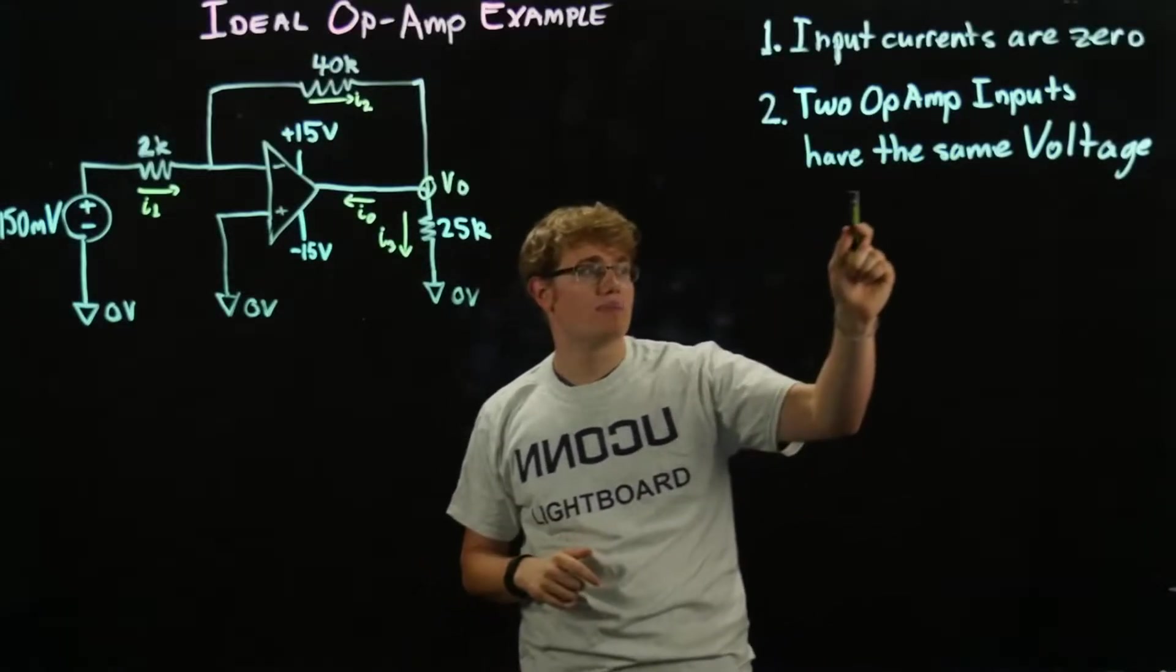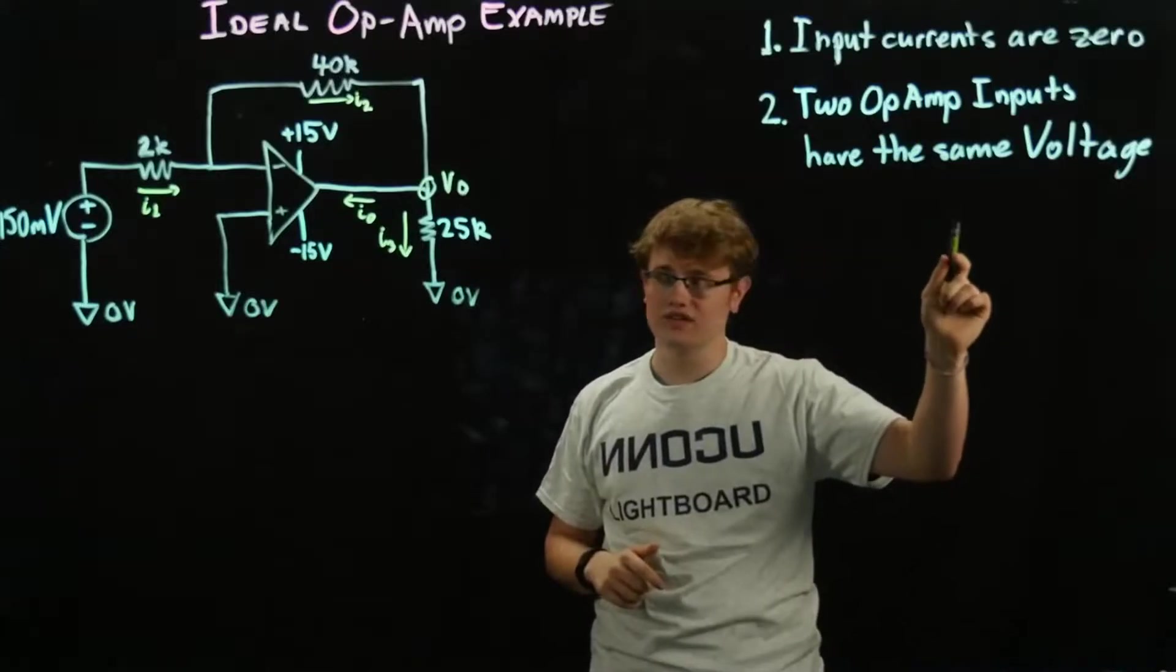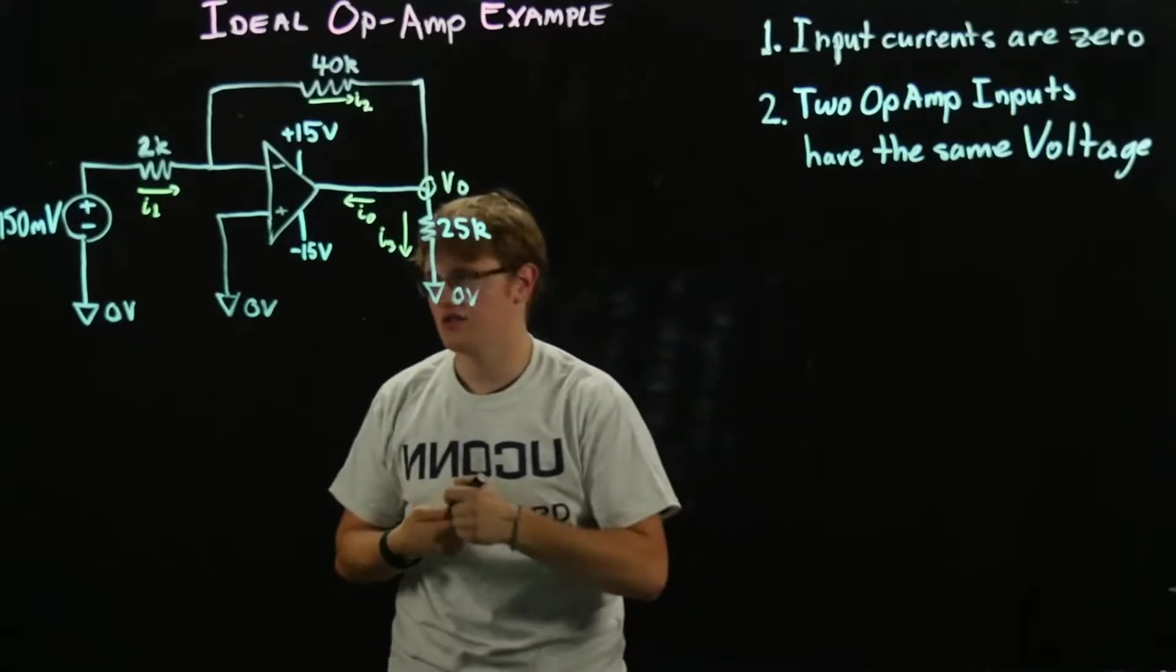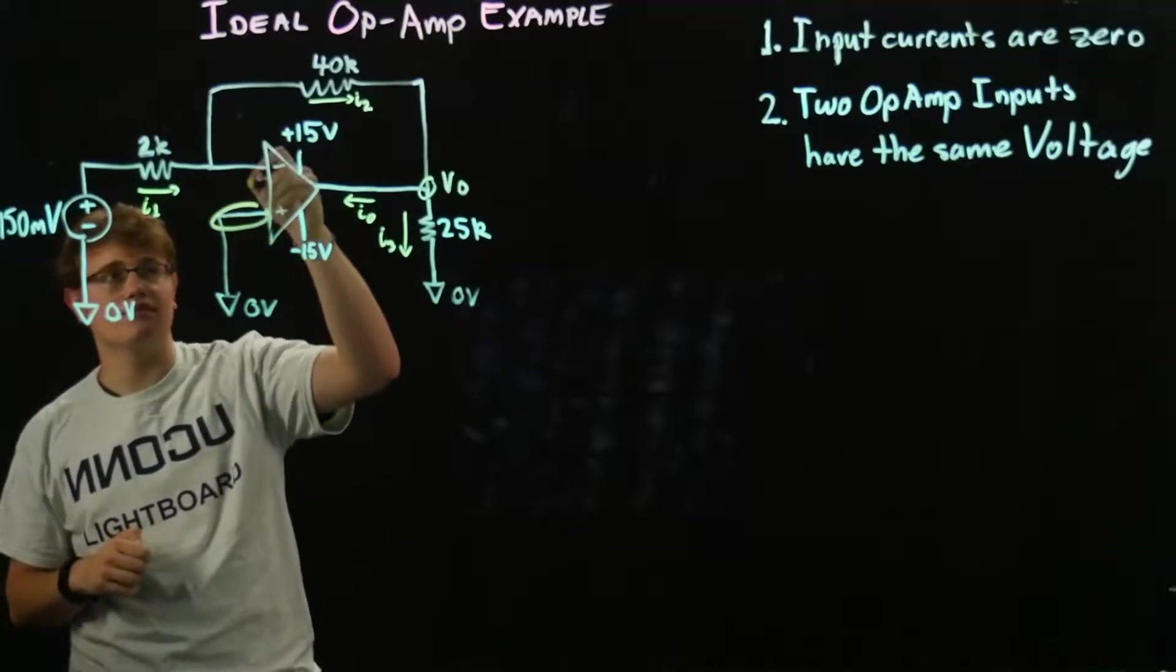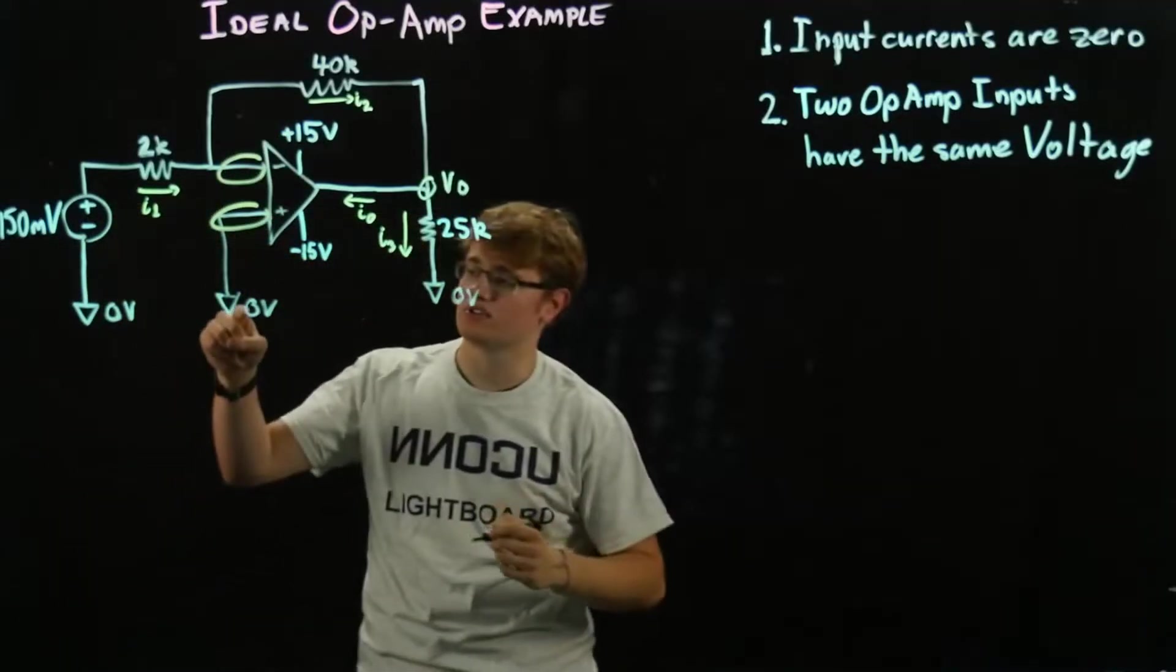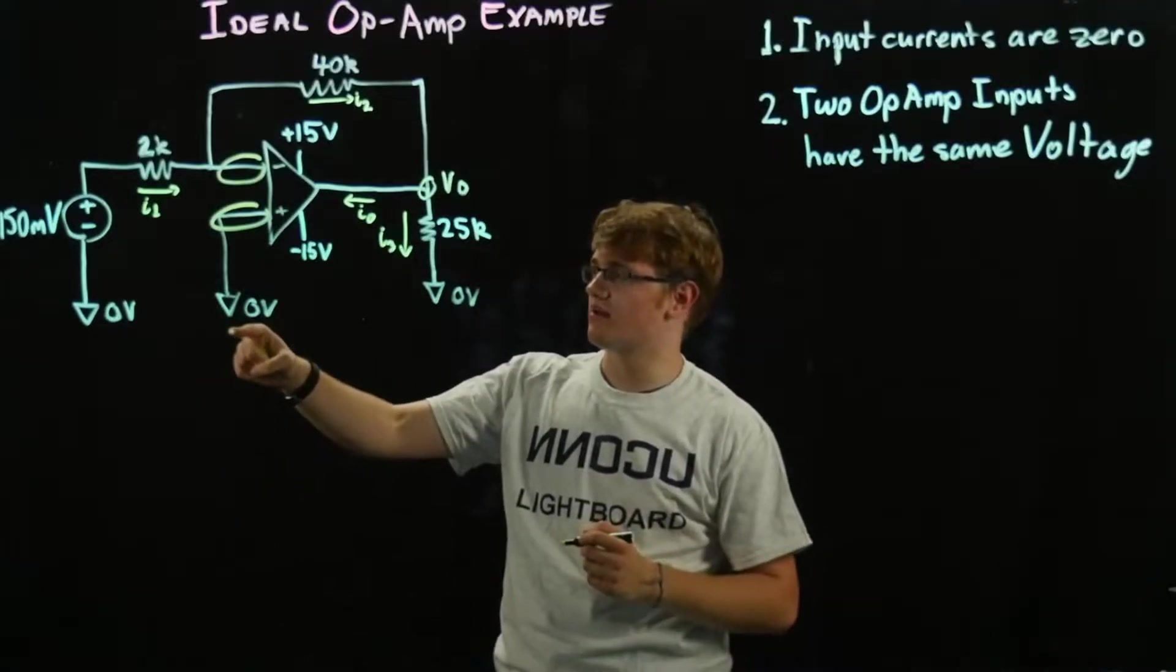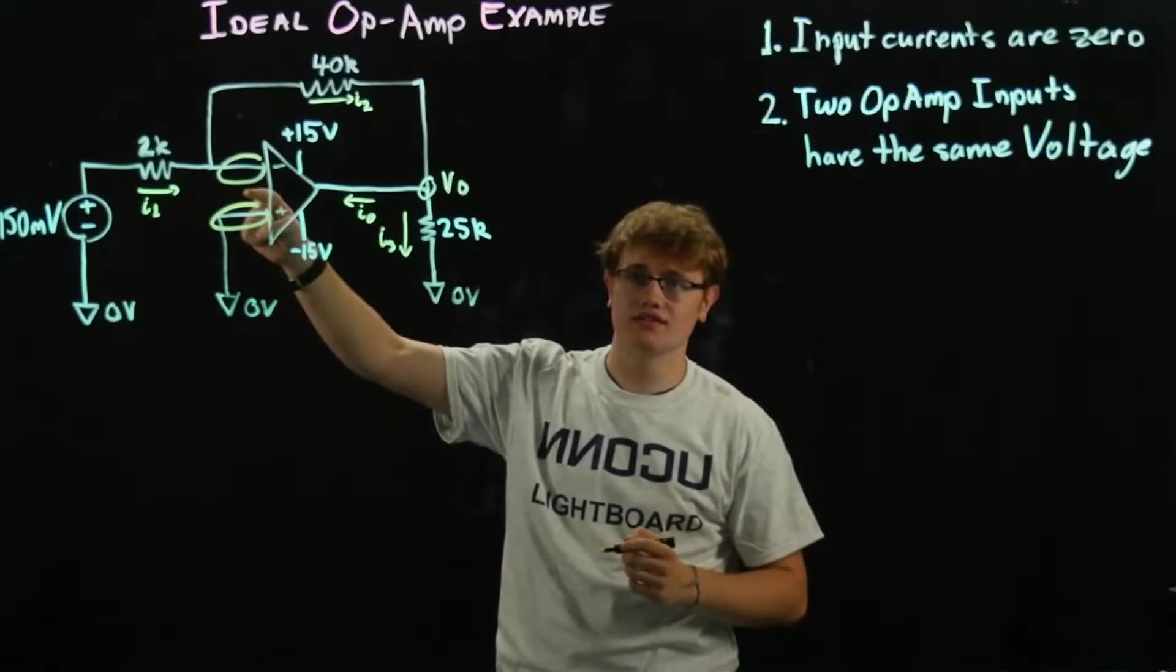Second rule is the two op-amp inputs have the same voltage. So the voltage here and this is going to be the same voltage as here. Now we know this voltage right here.